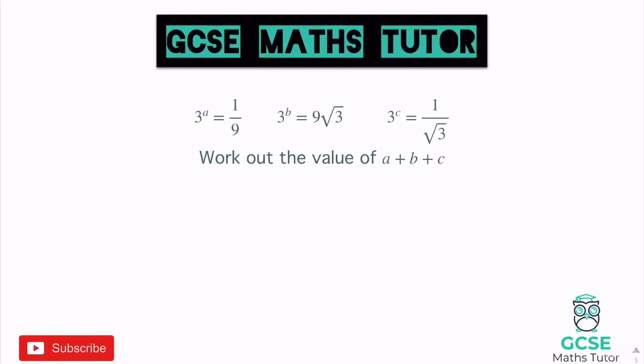Finding a: 3 to the power of a equals 1 over 9. It's flipped over, so we know it's a minus power — 3 to the power of minus something. The 3 has turned into 9, and 3 to the power of 2 is 9, so it's minus 2. Therefore a equals minus 2.